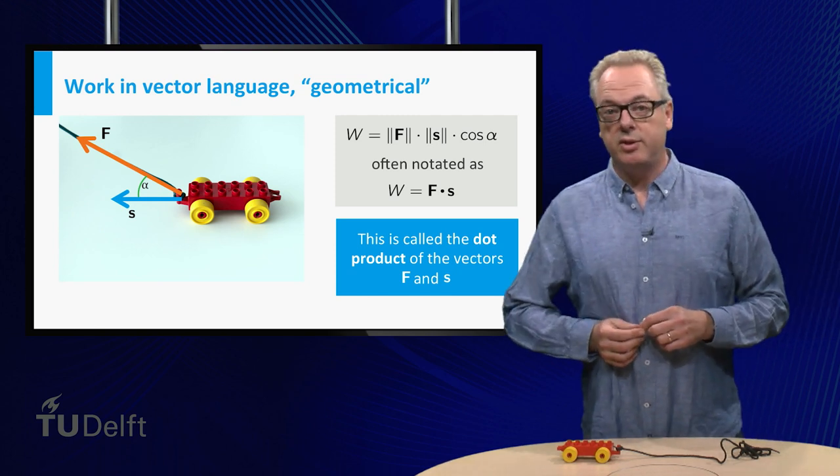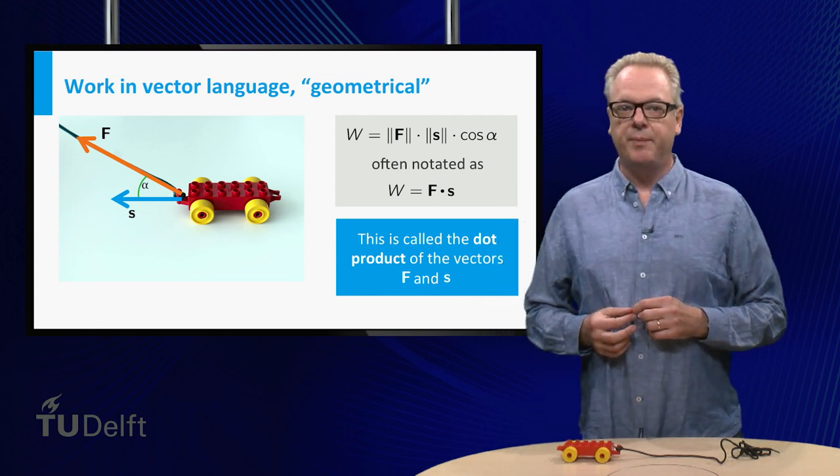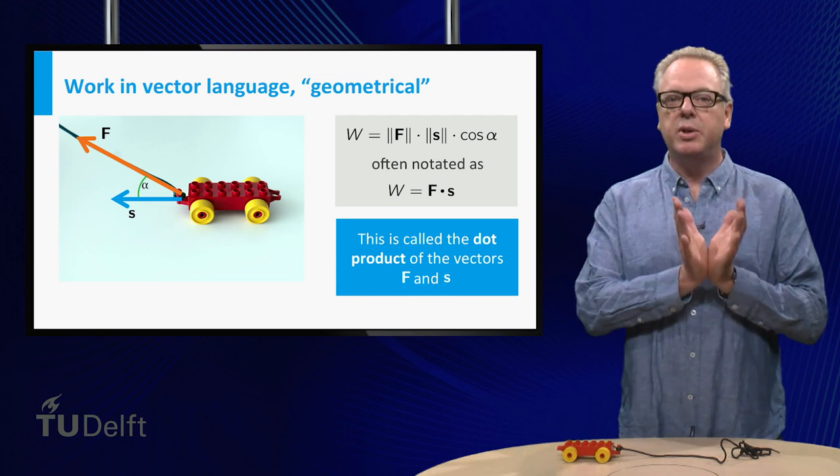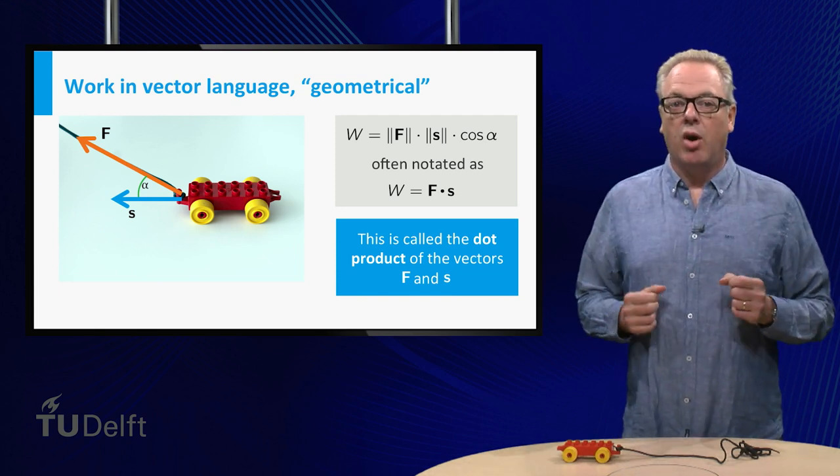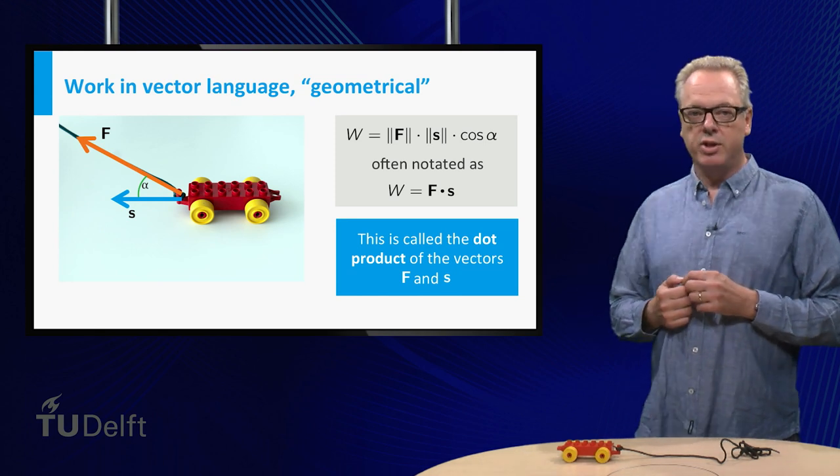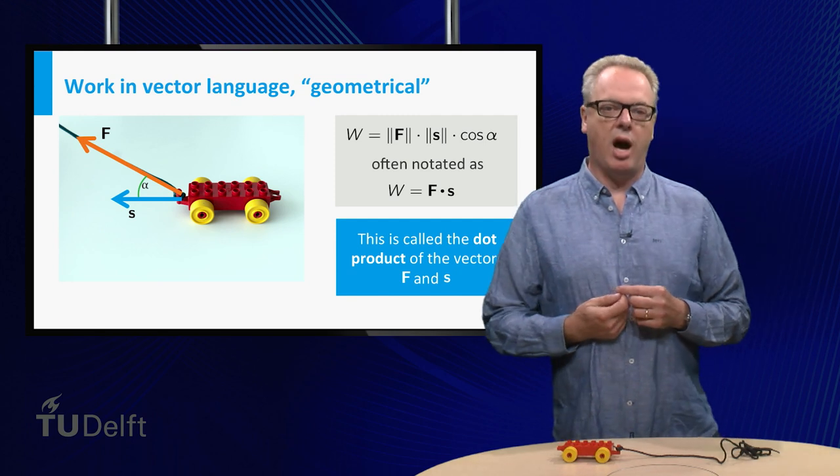A disadvantage of calculating the dot product in this geometrical way is that you have to know the angle between the vectors and the length. Often however, the components of the vectors are given, and then the angle is hard to compute.